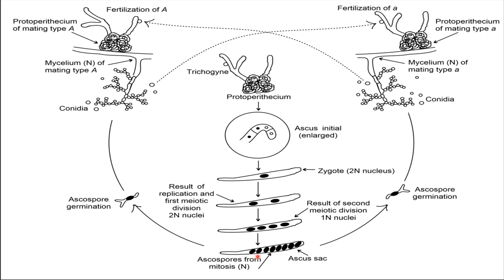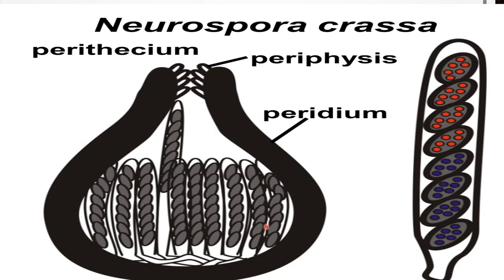Each nucleus secretes a wall around itself and metamorphoses into an ascospore. In Neurospora tetrasperma, only four ascospores are formed in the ascus. They are dark brown or black in color and have a characteristic ribbed wall. A globose envelope of sterile hyphae encloses the mature ascogonium from all sides, resulting in formation of the perithecium. The mature perithecium is a dark-colored, globular, flask-shaped structure surrounded by dark pseudo-parenchymatous tissue.